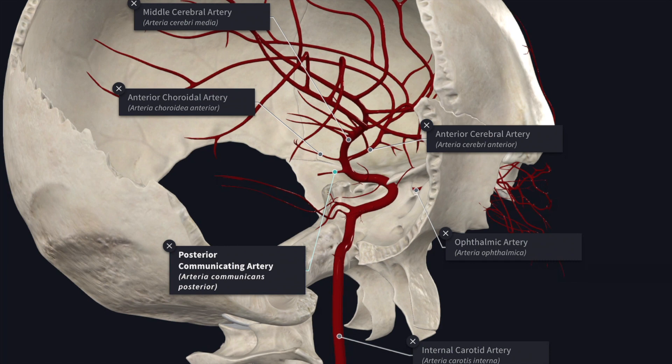The next branch is the posterior communicating artery. The posterior communicating artery arises close to the termination of the internal carotid artery. It runs backwards and anastomoses with the proximal part of the posterior cerebral artery.